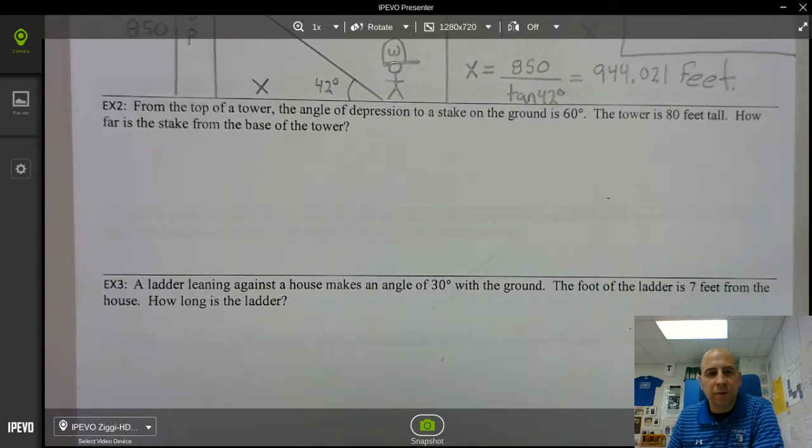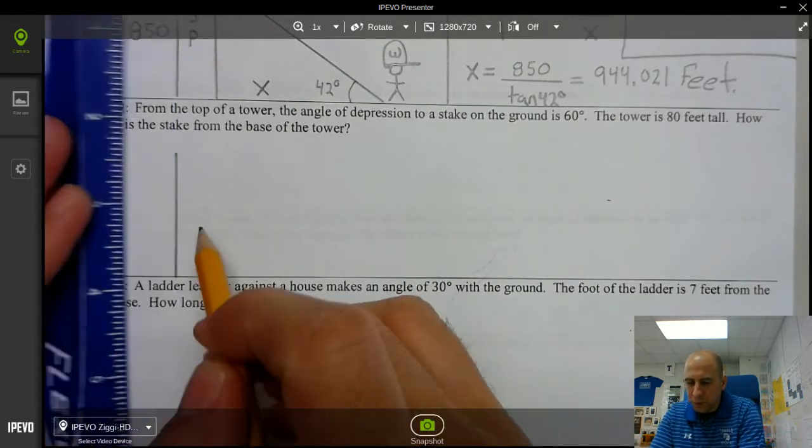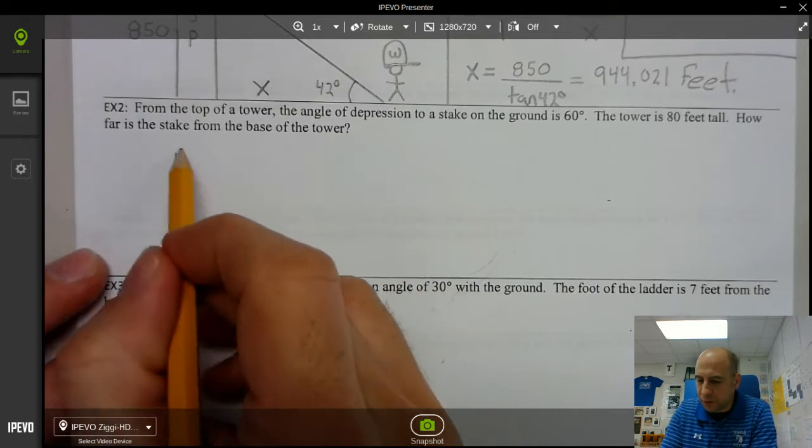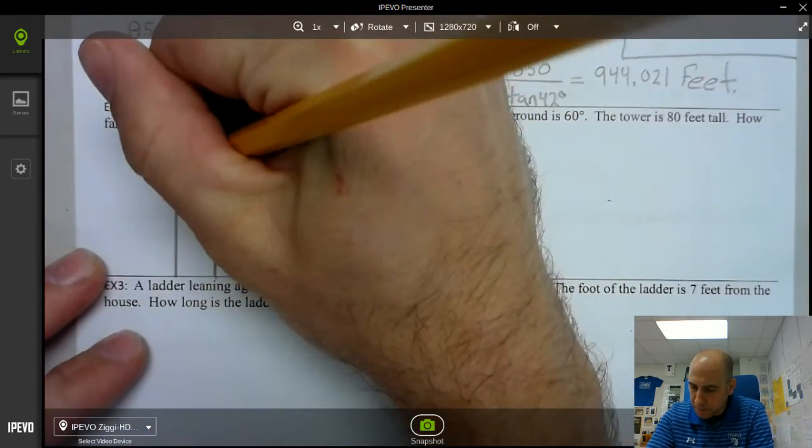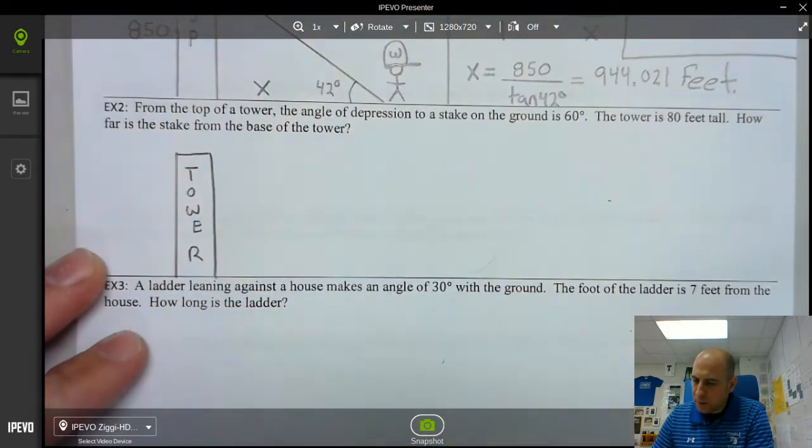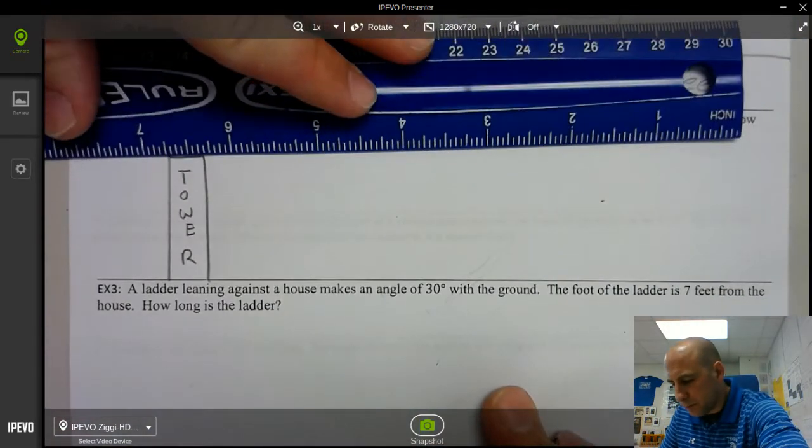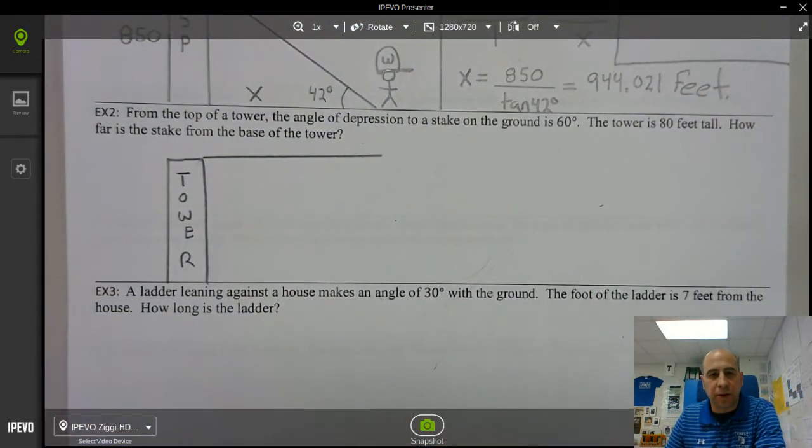Alright from the top of a tower, so as I'm reading this I'm going to do step one, draw the picture. So from the top of a tower, the angle of depression. Now the angle of depression is pay close attention. I apologize.